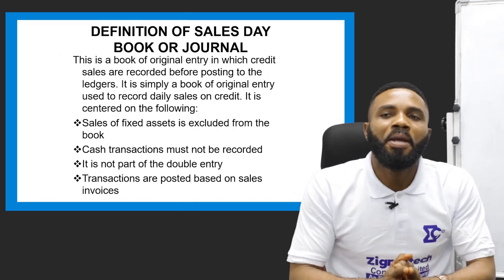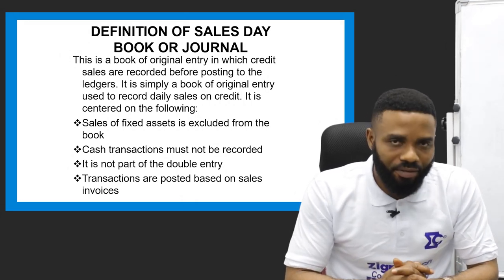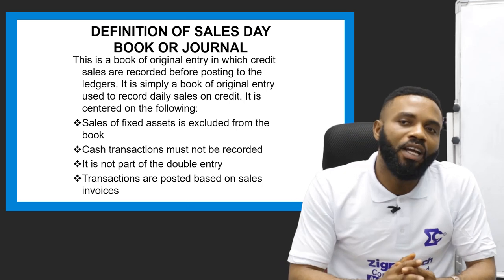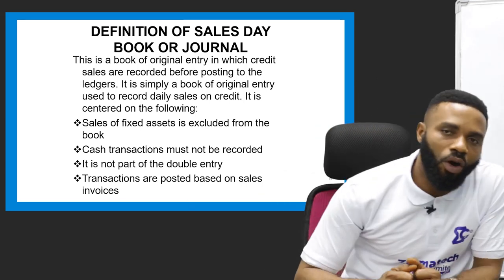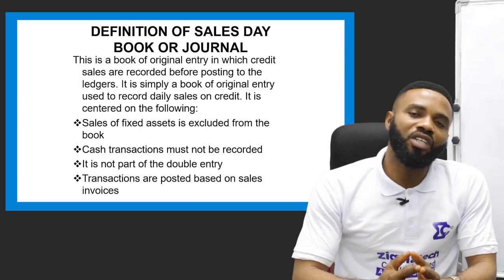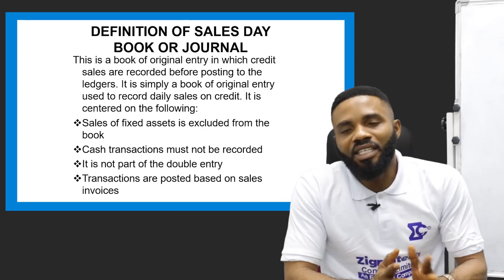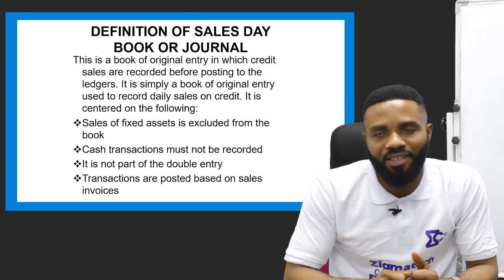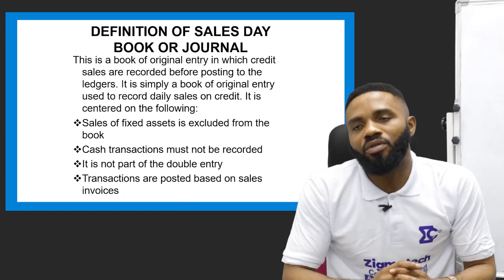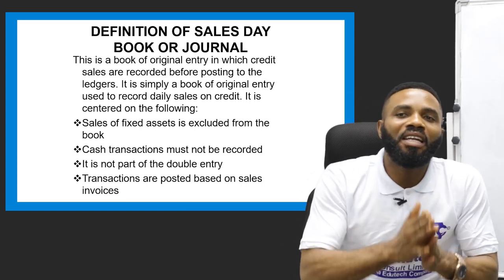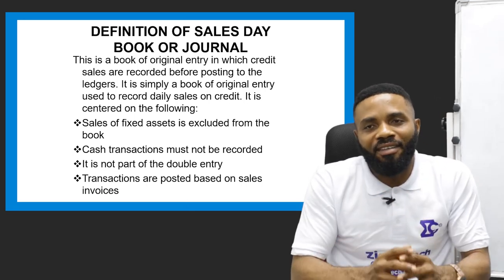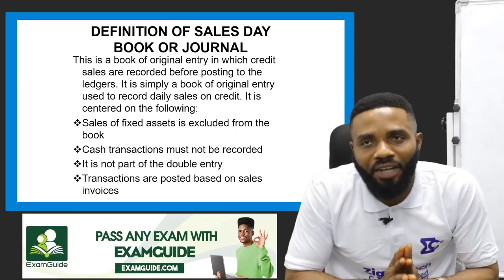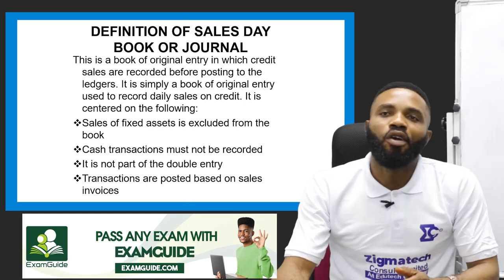The last rule is that transactions are posted based on sales invoices. Invoices are simply evidence proving that transactions are taking place — basically purchases or sales. Since we are talking about the sales day book, the invoice is an incoming invoice, which serves as documentary or objective evidence substantiating the reality of a particular sale. In the practical example, you will see a column spelling out the number of sales carried out within the period under consideration.